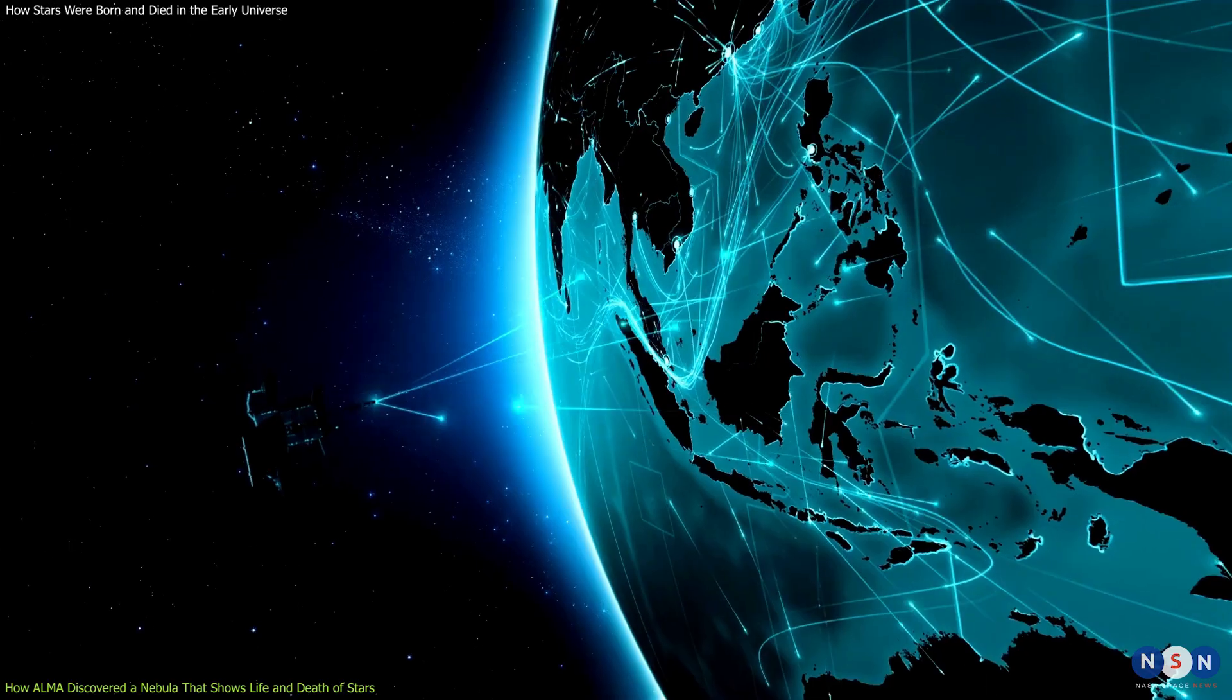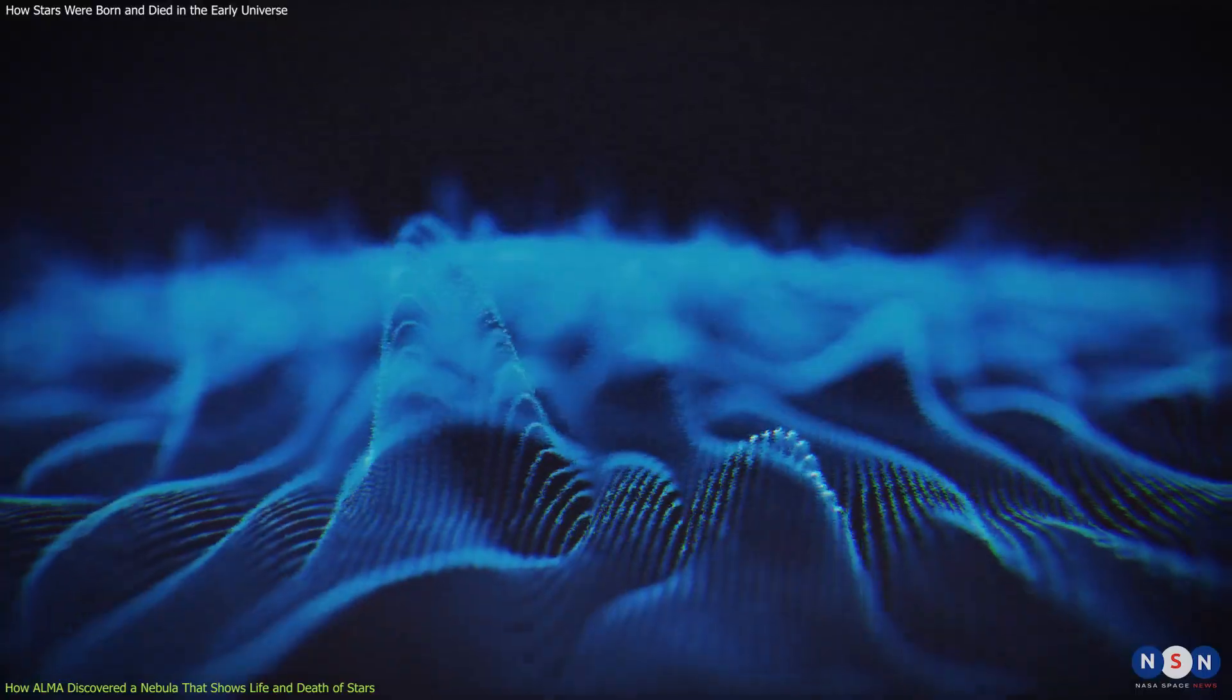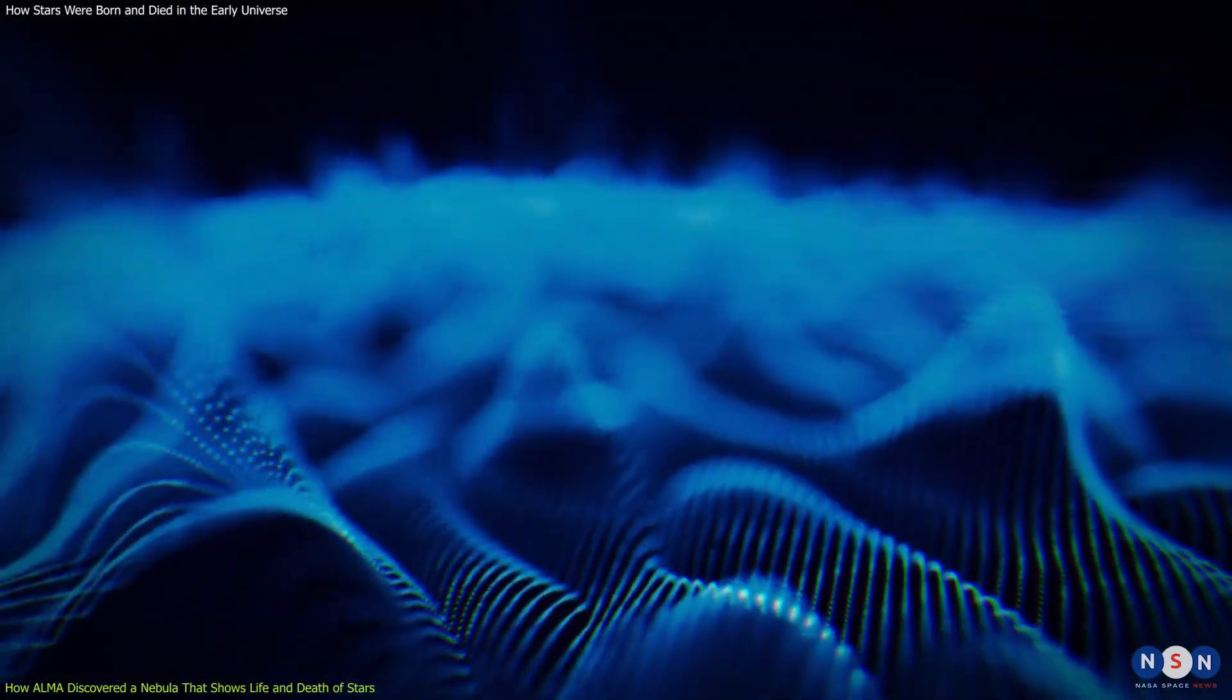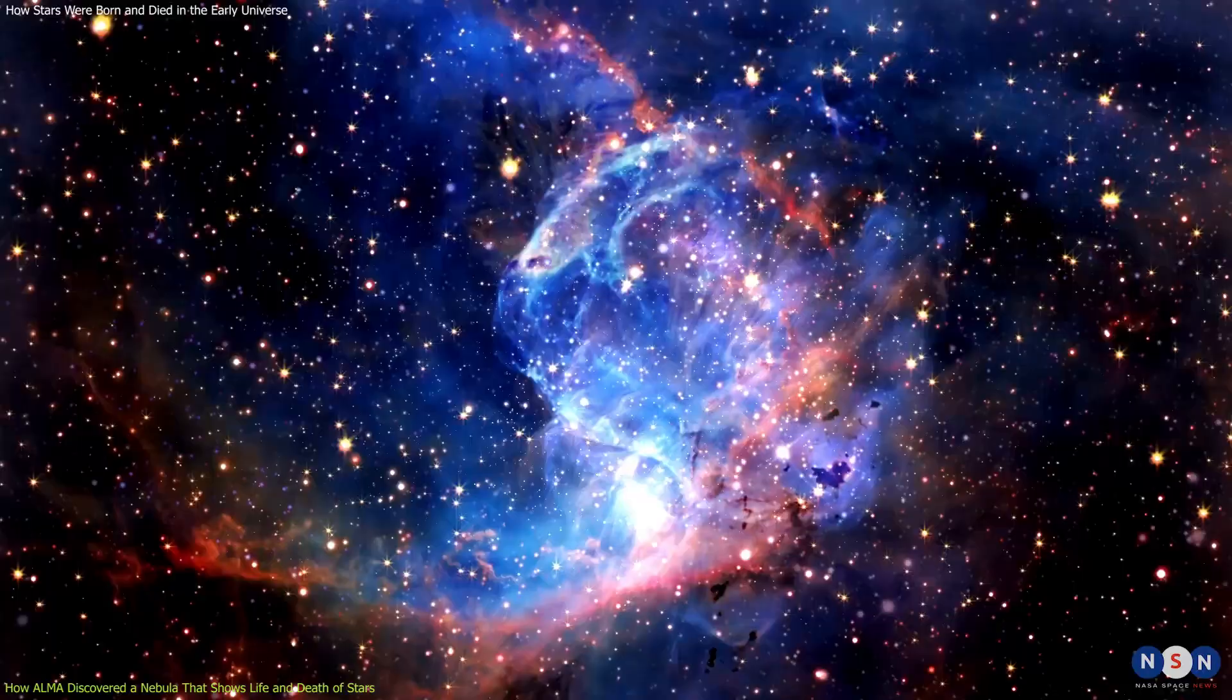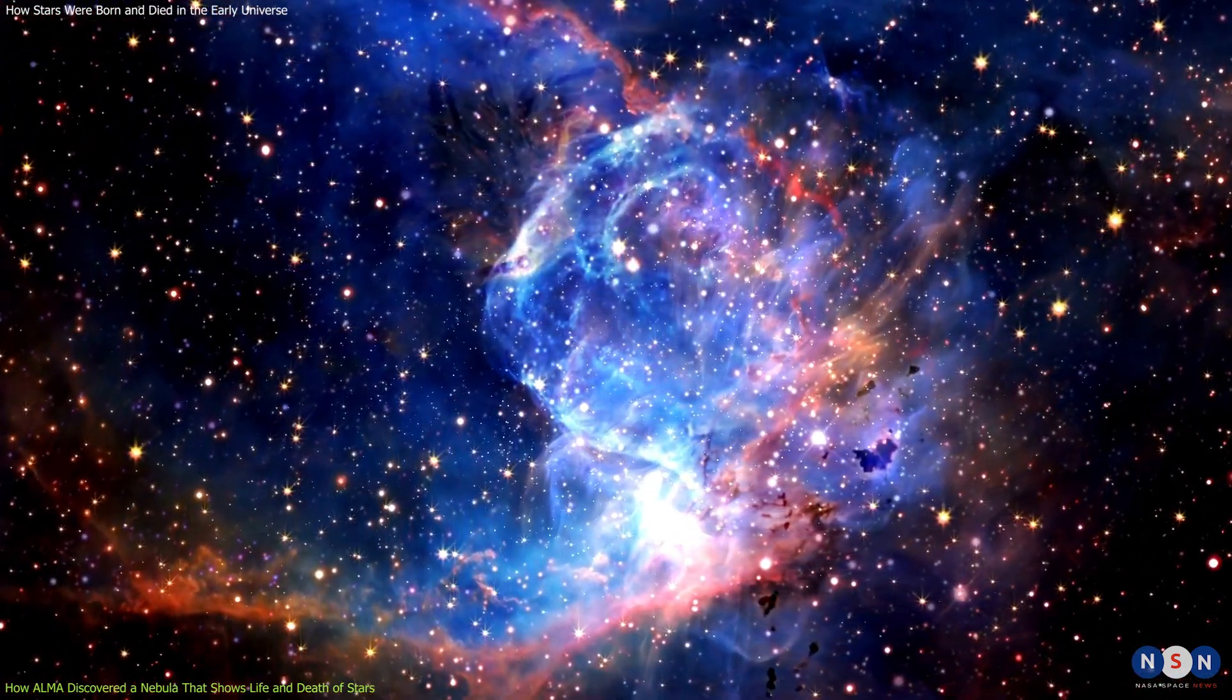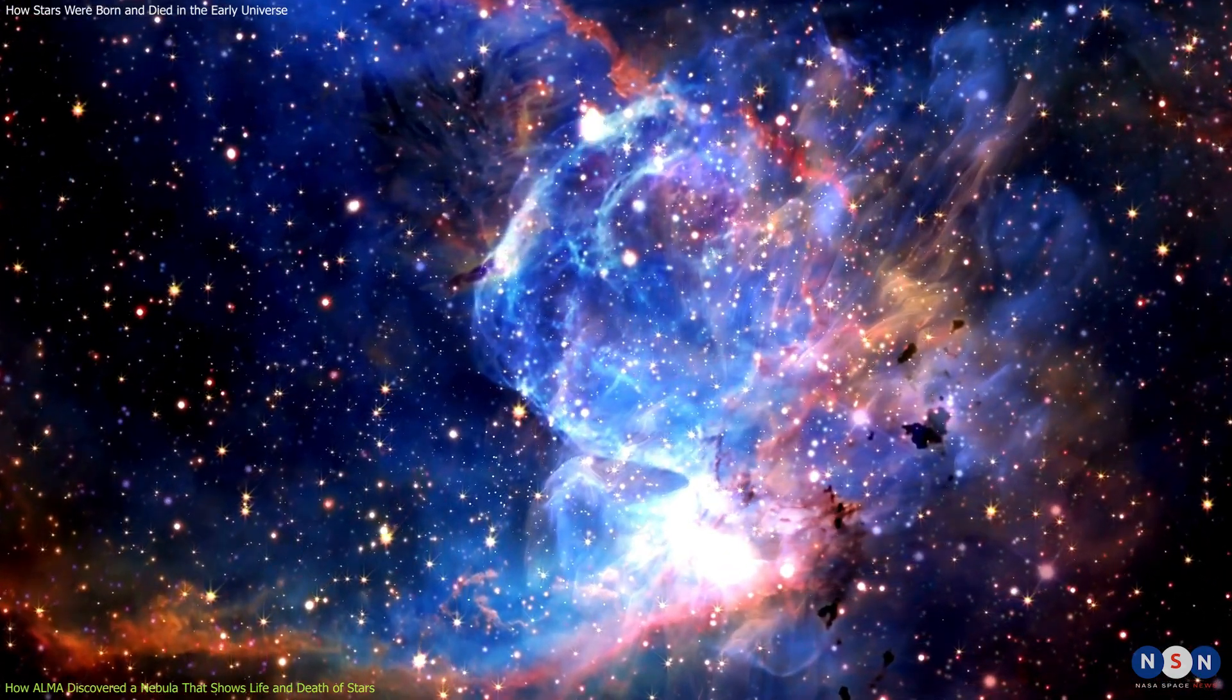Radio waves are a type of electromagnetic radiation that has longer wavelengths and lower frequencies than visible light. Radio waves can penetrate through dust and gas that block visible light, allowing astronomers to see deeper into space and reveal hidden structures and phenomena.